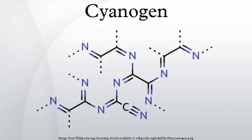Certain derivatives of cyanogen are also called cyanogen even though they contain only one CN group. For example, cyanogen bromide has the formula NCBr. Cyanogen is the anhydride of oxamide, H2NC(O)C(O)NH2, and NCCN plus 2H2O gives oxamide, although oxamide is manufactured from cyanogen by hydrolysis: NCCN + 2H2O → H2NC(O)C(O)NH2.